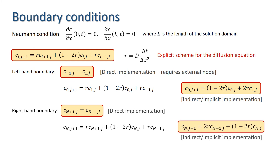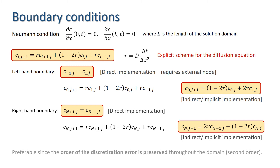This method, whether implemented directly or indirectly, is preferable to its first-order counterpart because the truncation error is of order delta x squared. Thus the order of the discretization error of the model is preserved throughout the domain — it is second-order.